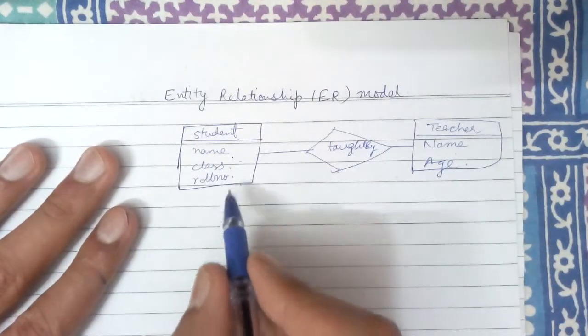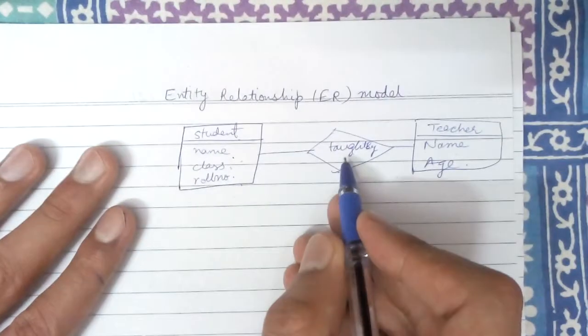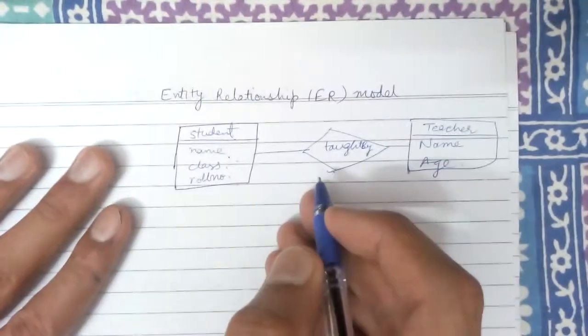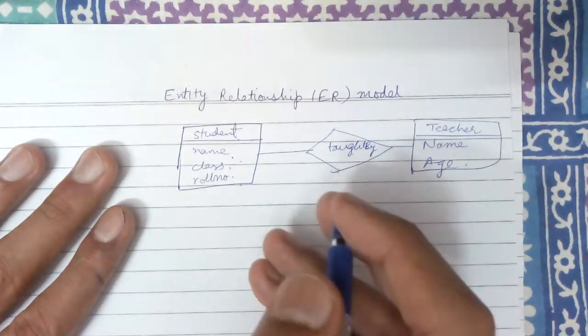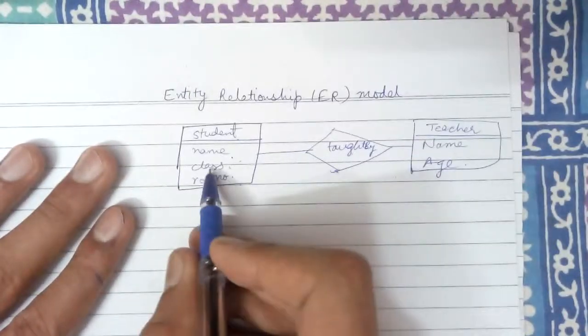So this is an entity relationship diagram. So these are the entities. This is the relation. Entity relationship diagram is like that. Hope you understood the diagram as well as the entities.